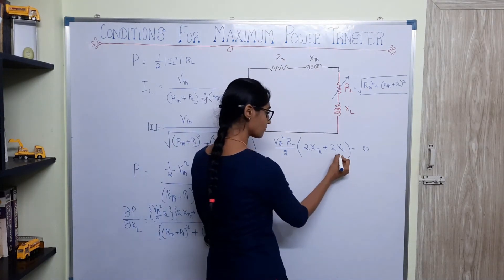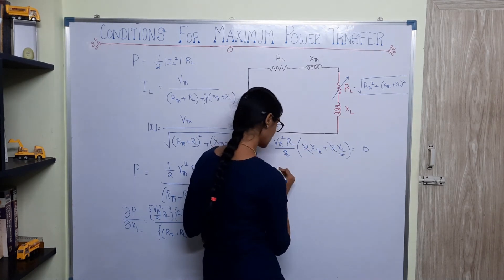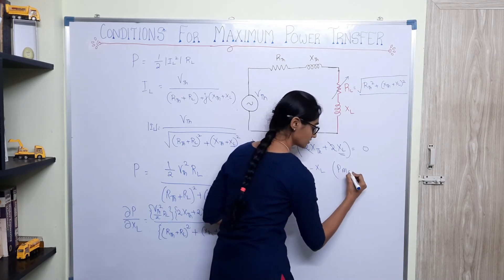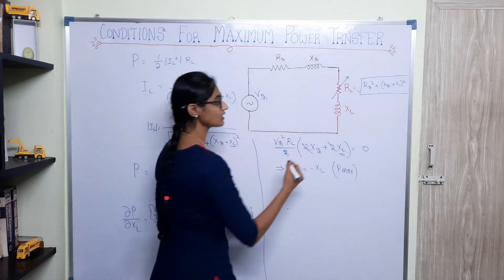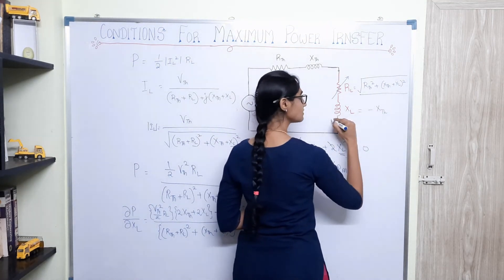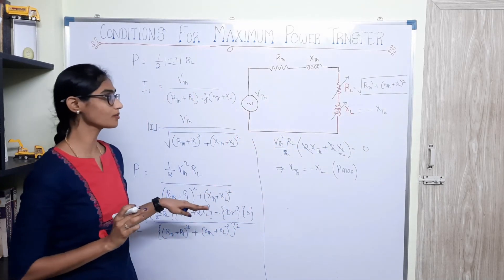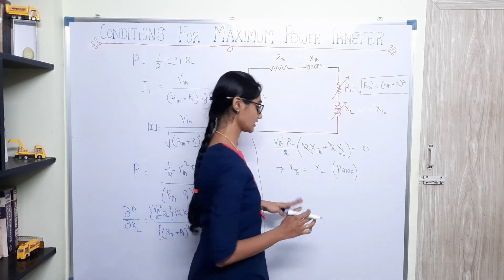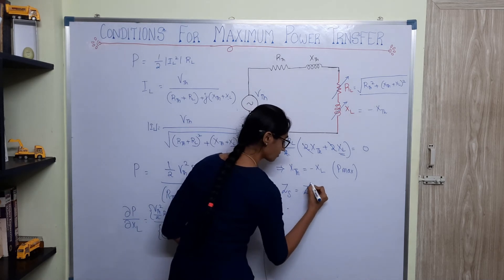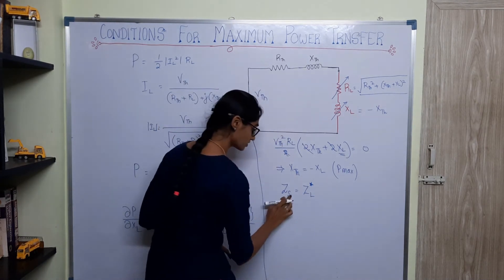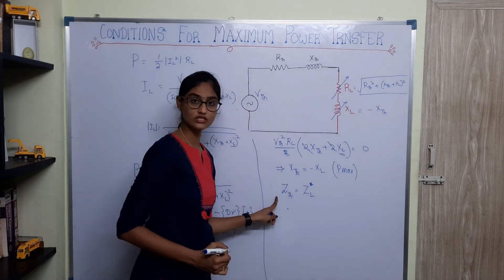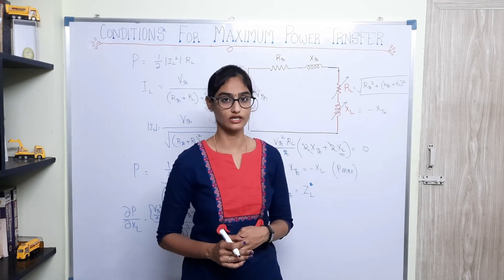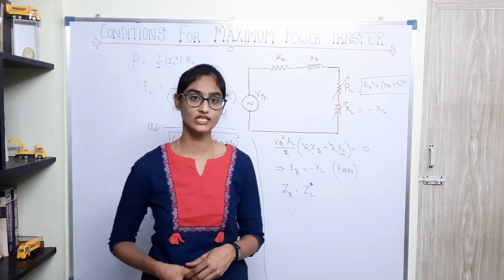This implies that when XTH = −XL, or equivalently XL = −XTH, maximum power will be transferred. So now you can say that when the source's Thevenin impedance is equal to the complex conjugate of the load's impedance, maximum power is achieved. We have now seen the condition to achieve maximum power transfer in an inductive load.